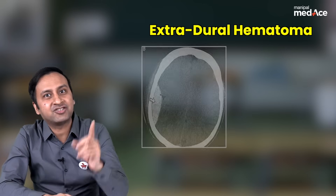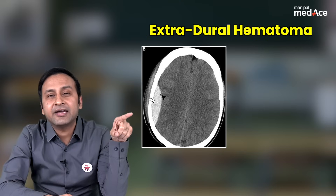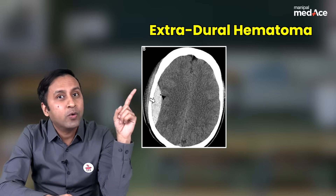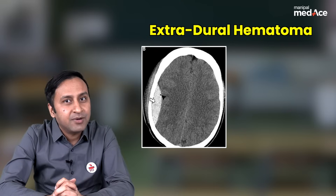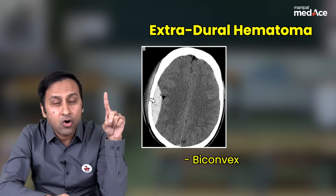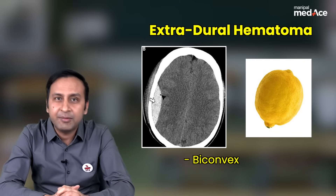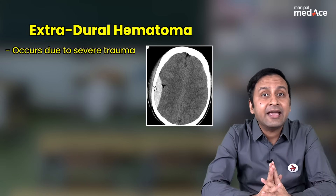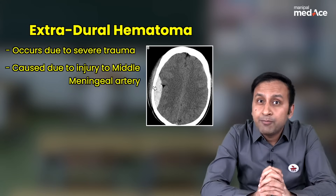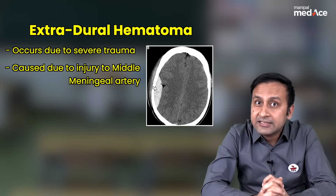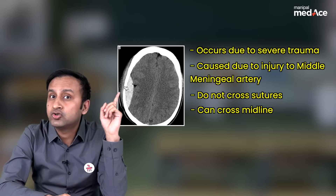Let's first talk about the extradural bleeds. Look at this particular CT. What do you see here? You can see that there is a very well-demarcated extraaxial hyperdensity over the right parietal convexity. This is a classical appearance of extradural hematoma, which takes the shape of a biconvex or a lemon. EDH occurs due to high-impact trauma and due to the rupture of the middle meningeal artery. The most important point to remember about EDH is it does not cross sutures. It may cross midline, but it does not cross sutures.